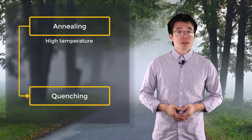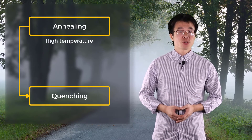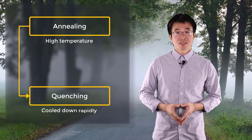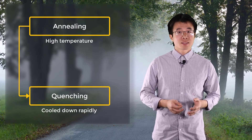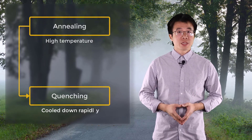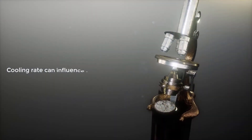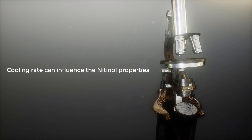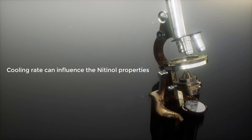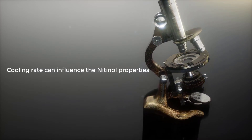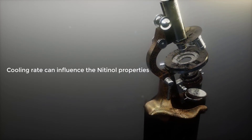During the annealing process, the stents are kept at high temperature for a certain period of time. Then during the quenching process, the heated stents are cooled down rapidly. The cooling rate is very important because if it's too slow, it can allow thermodynamic forces to change the microstructure of the material and cause weakness. And if it's too fast, it can cause brittleness, cracks, or temperature-induced stresses.